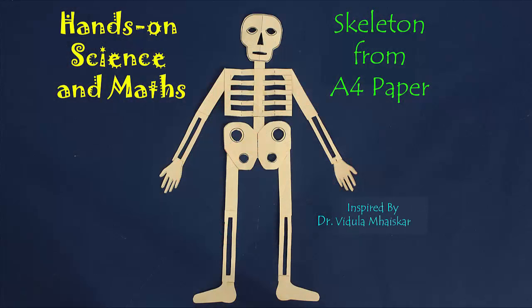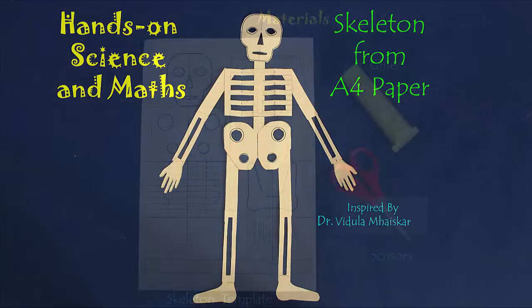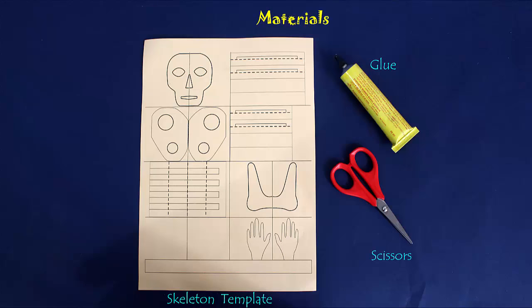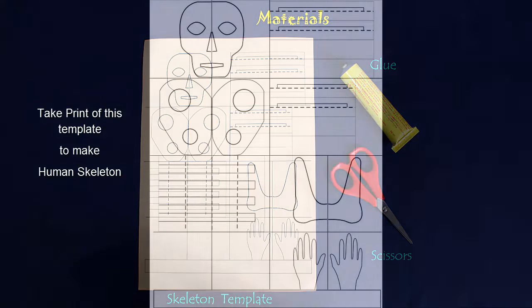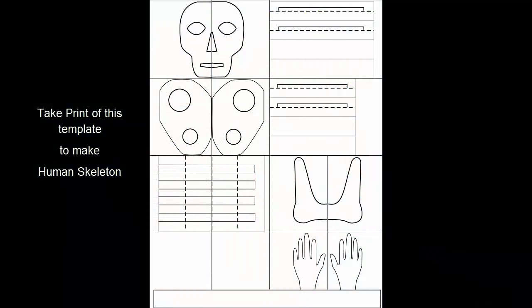We'll make this wonderful paper skeleton from an A4 sheet. The parts have already been drawn for you. Take a screenshot and then print it on an A4 sheet. You will also need glue and scissors.